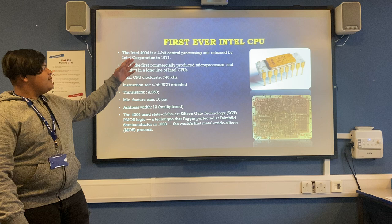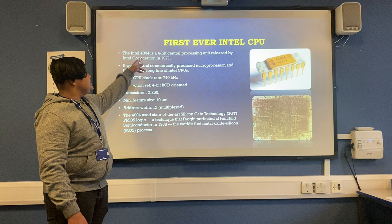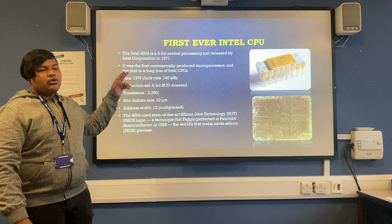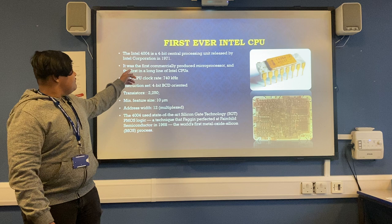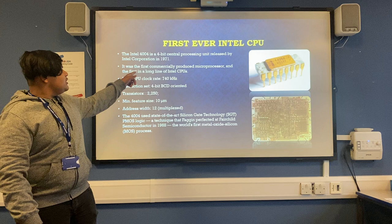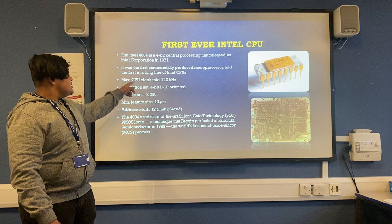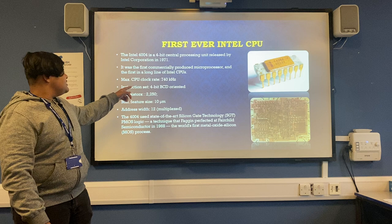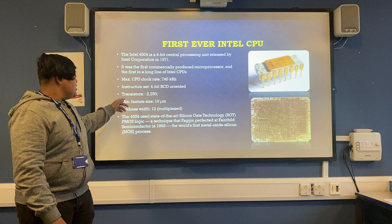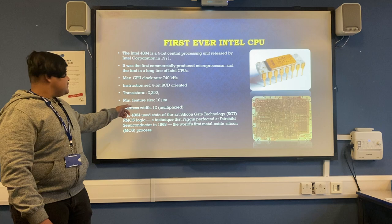Let's see the first ever Intel CPU. The first Intel CPU is the Intel 4004, a 4-bit central processing unit released by Intel Corporation in 1971. It was the first commercially produced microprocessor and the first in a long line of Intel CPUs. The maximum clock rate was 740 kHz, instruction set was 4-bit BCD oriented, transistors were 2,250, minimum feature size was 10 micrometers, and address width was 12-bit.